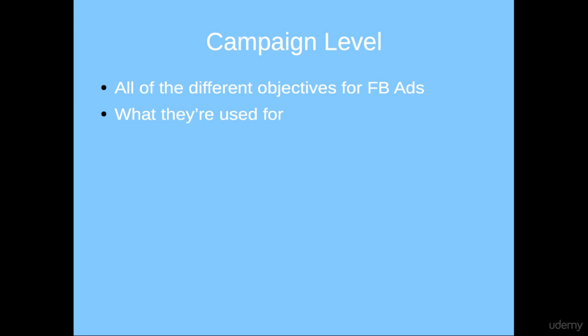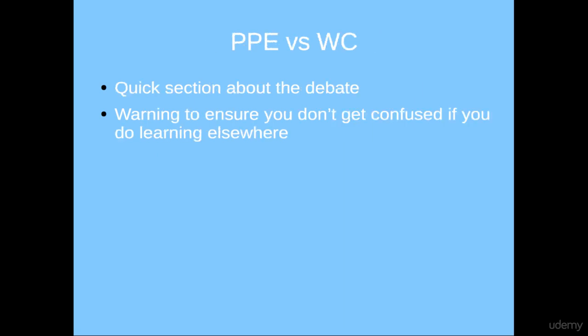We then talk about the campaign level — all of the different objectives you can use and what they're used for specifically. Then we talk about PPE versus WC, that's page post engagement versus website conversion. It's a quick overview of that debate to ensure you aren't confused if you read about it elsewhere on the internet.